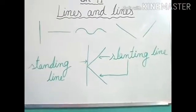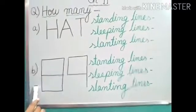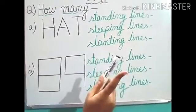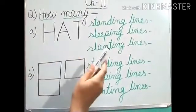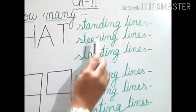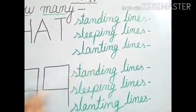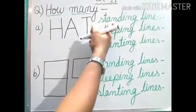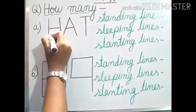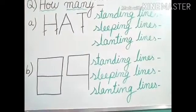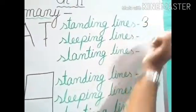Now I am going to give you some questions based on these lines. Now, can you see here I have written two questions. H A T — Hat — with the alphabet. With the capital alphabet I have written H A T Hat, and now you have to tell me how many standing lines, sleeping lines, and slanting lines are there. I will count the standing lines: one, two, and yes, this one also three. So how many standing lines are there? Three.